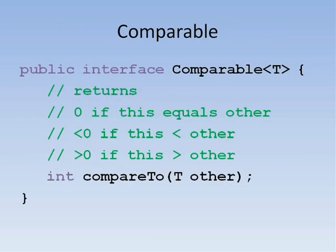One of the most useful interfaces built into Java is Comparable. To be comparable, there must be an ordering between objects. That is, for any two objects, we can determine if the first is less than, equal to, or greater than the second.